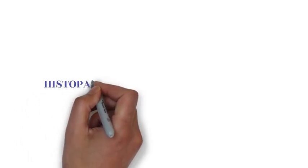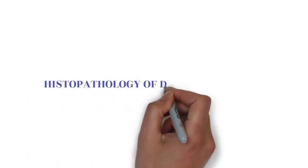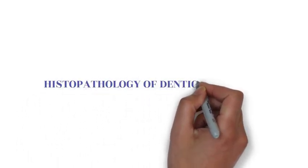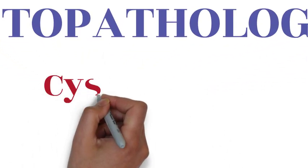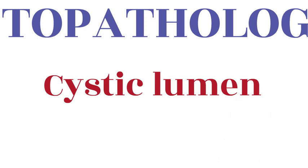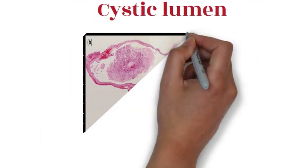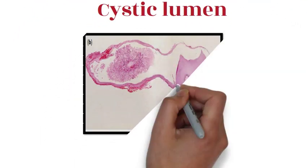Histopathology of the dentigerous cyst. The dentigerous cyst exhibits three main components: a cystic lumen, a lining epithelium, and a connective tissue wall.